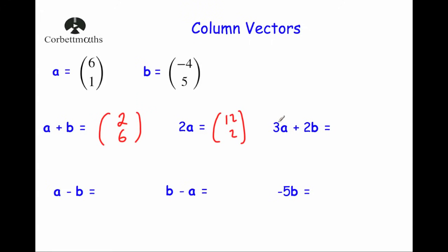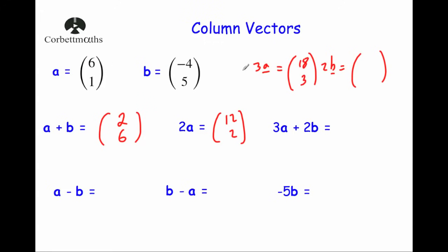Next, find 3a + 2b. I'll write out 3a and 2b separately, then add them. With a = (6, 1) and b = (-4, 5): 3a = (18, 3) and 2b = (-8, 10). Then 18 + (-8) = 10, and 3 + 10 = 13. So 3a + 2b = (10, 13). Showing the working step by step is helpful, especially in an exam.